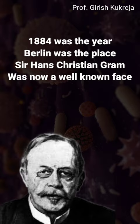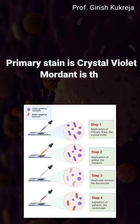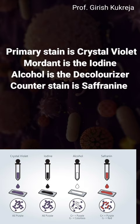Primary stain is crystal violet. The mordant is the iodine. Alcohol is the decolorizer. Counter stain is safranine.